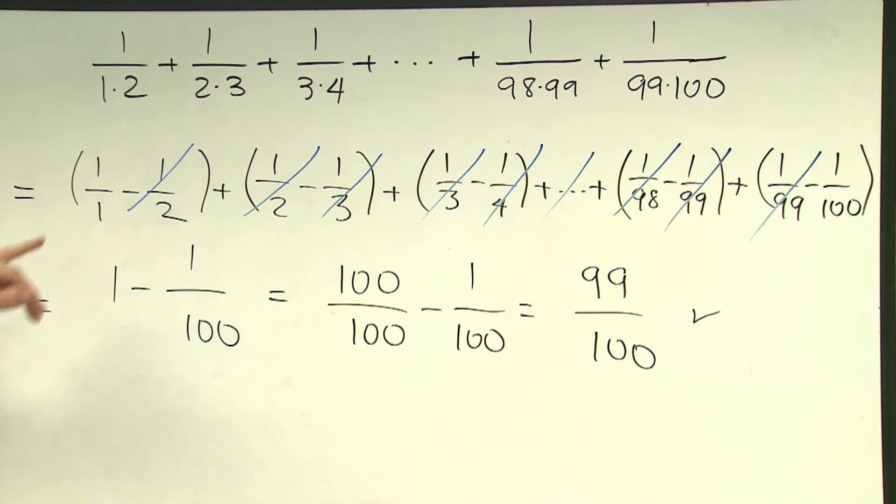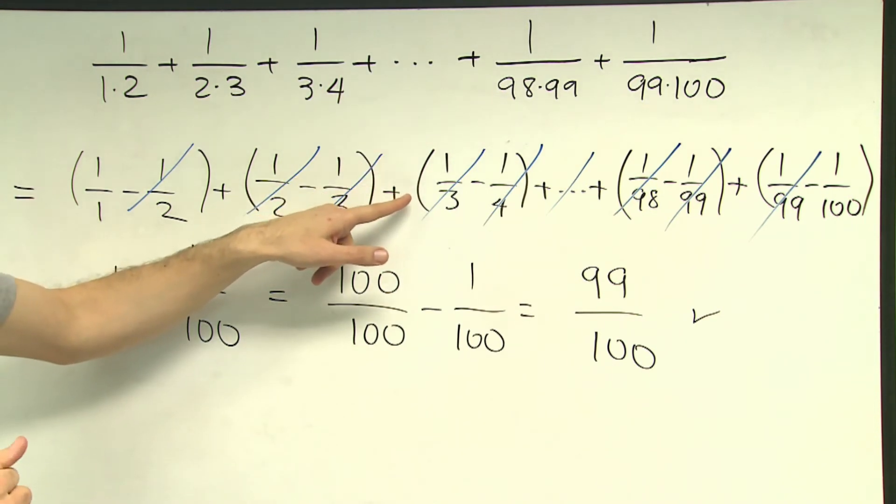When you look at that negative 1 over 2, I can simply find that it could be cancelled out with positive 1 over 2. And also I see negative 1 over 3 can be cancelled out with positive 1 over 3 and so on.